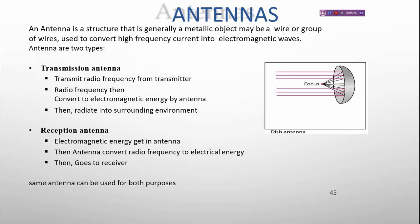There are two types of antenna. First is the transmission antenna, which transmits radio frequency from the transmitter. The radio frequency is converted into electromagnetic energy by the antenna and radiated into the surrounding environment. In a reception antenna, electromagnetic energy enters the antenna, which converts it into electrical energy — the opposite of a transmission antenna — and sends it to the receiver.